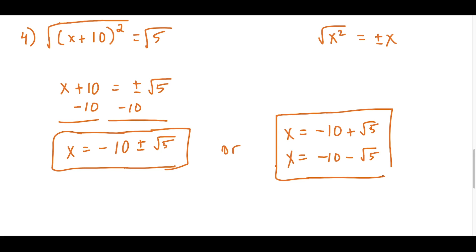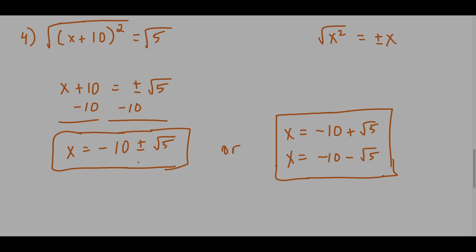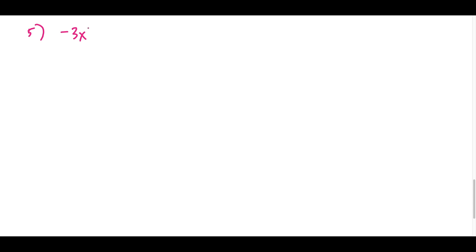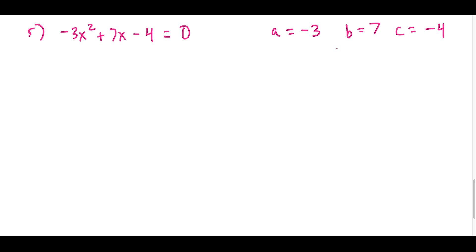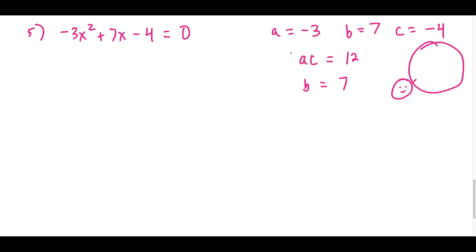For the fifth question, we have -3x² + 7x - 4 = 0. We identify the coefficients: a = -3, b = 7, c = -4. This method is called the AC method — multiply a and c: (-3)×(-4) = 12, and the b term is 7. We need two numbers that multiply to 12 and add to 7, which are 4 and 3.